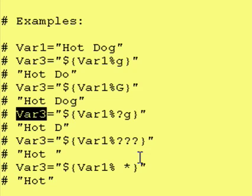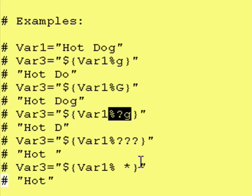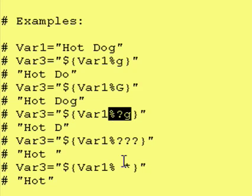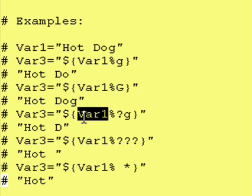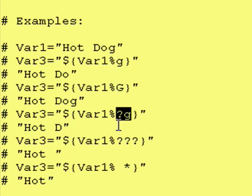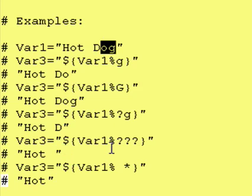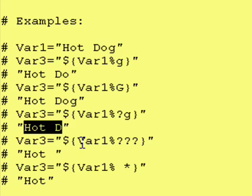Next, we try to assign to var3 the following: dollar sign curly brace var1, percent sign, question mark, lowercase g, curly brace. The question mark means any single character, and then we have a lowercase g. Once again, we take the contents of var1 and put them right there, so we have hot dog. Then this says remove from the right-hand side any single character followed by a g. Any single character followed by a g would match og. Therefore, we remove those two characters and we are left with hot space D, and that gets assigned to var3.